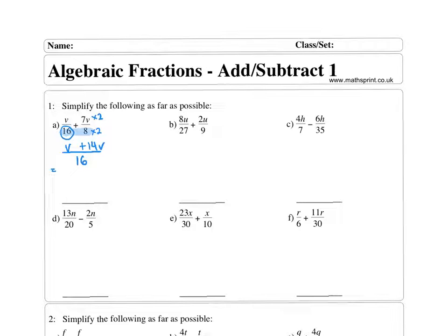Now that you've done that, you can add them together if they're like terms. Now, because they're both Vs, you can add them together. So what's V plus 14V? Yeah, so your final answer would be 15V over 16. I can't simplify that anymore, can I? Like there's no number that they both go into. That's as simplified.